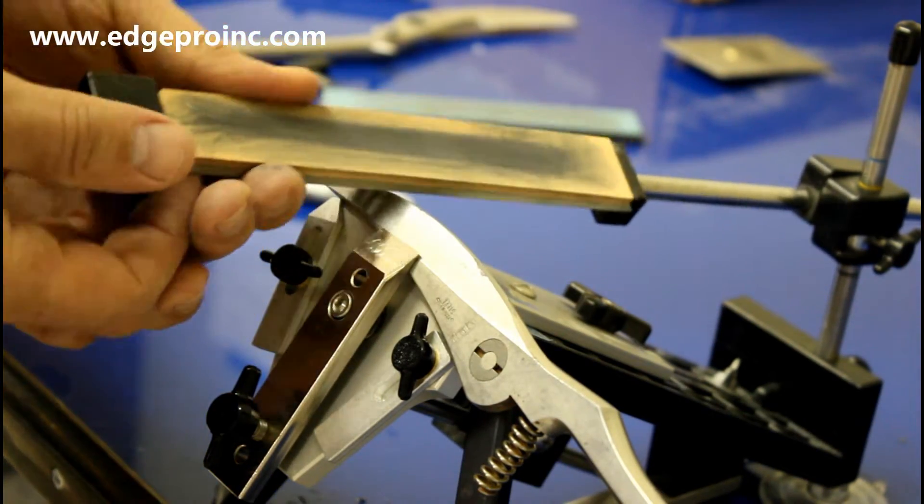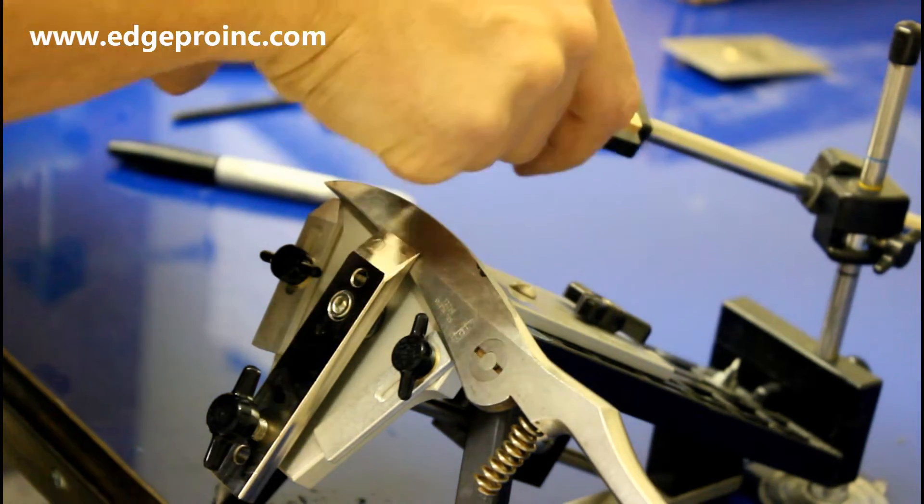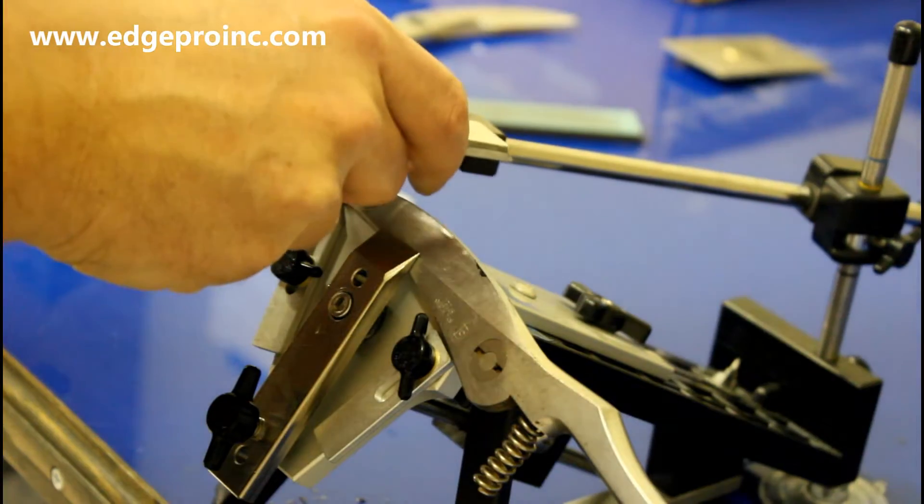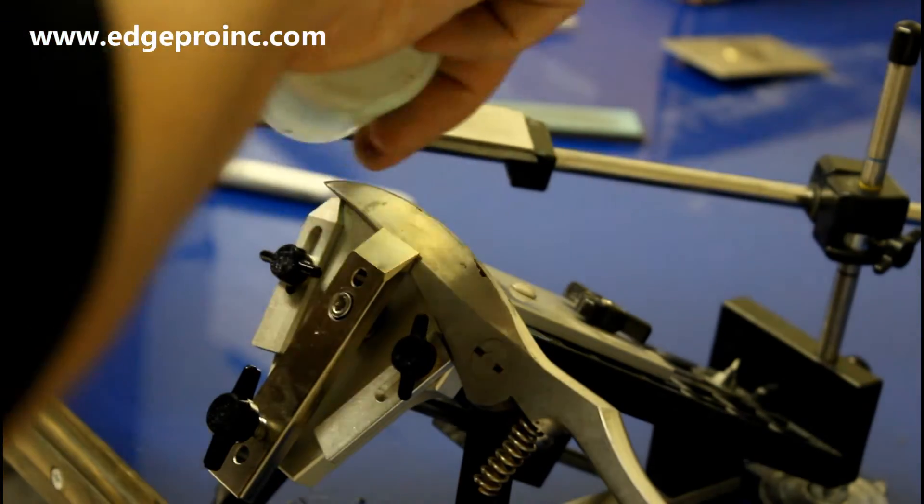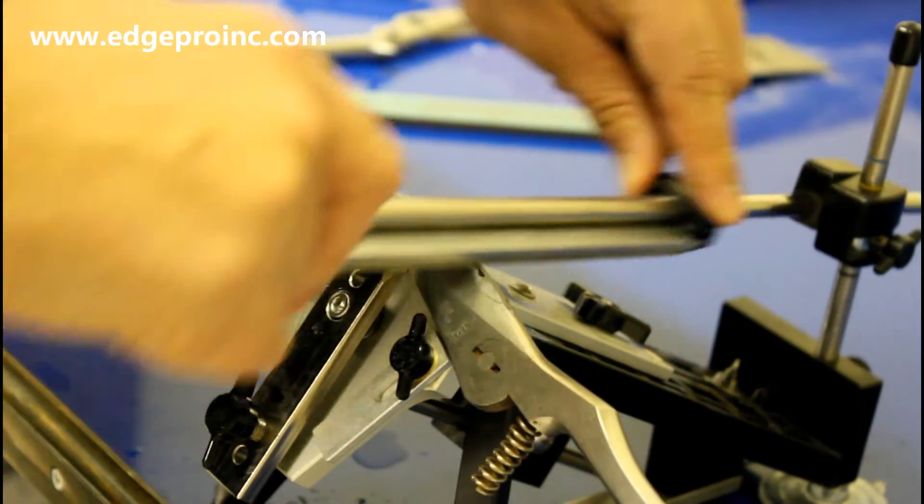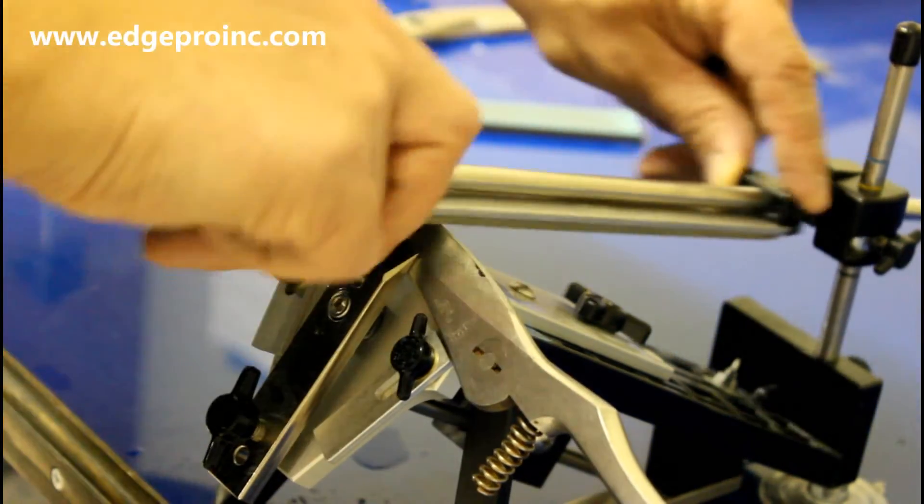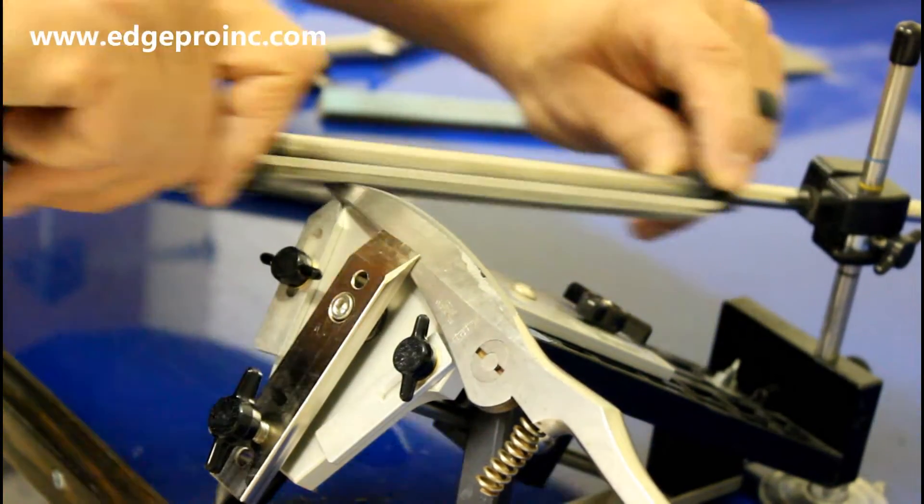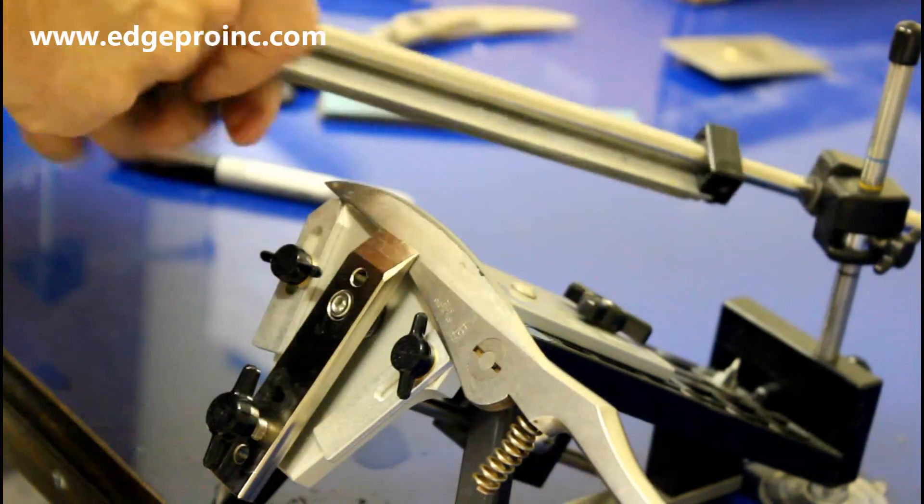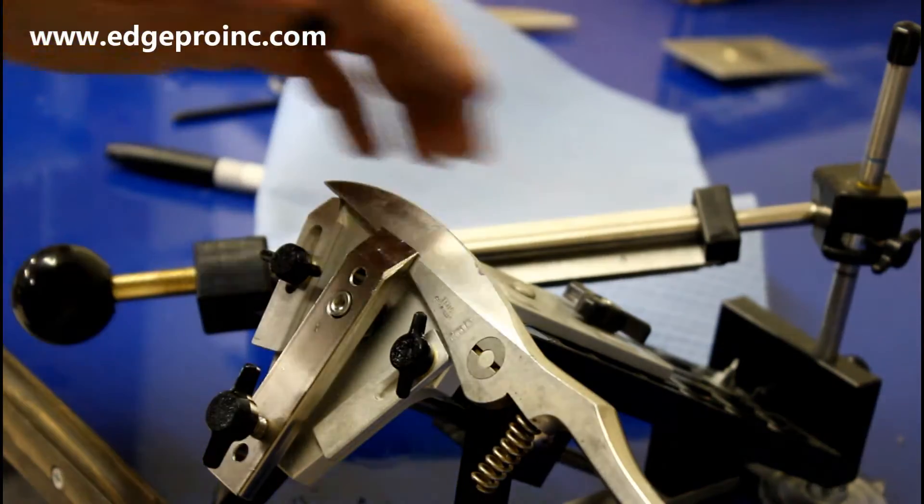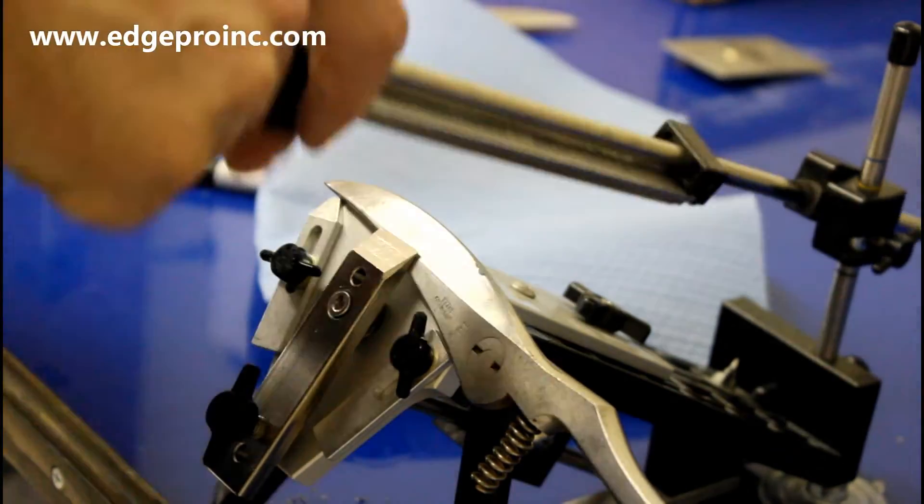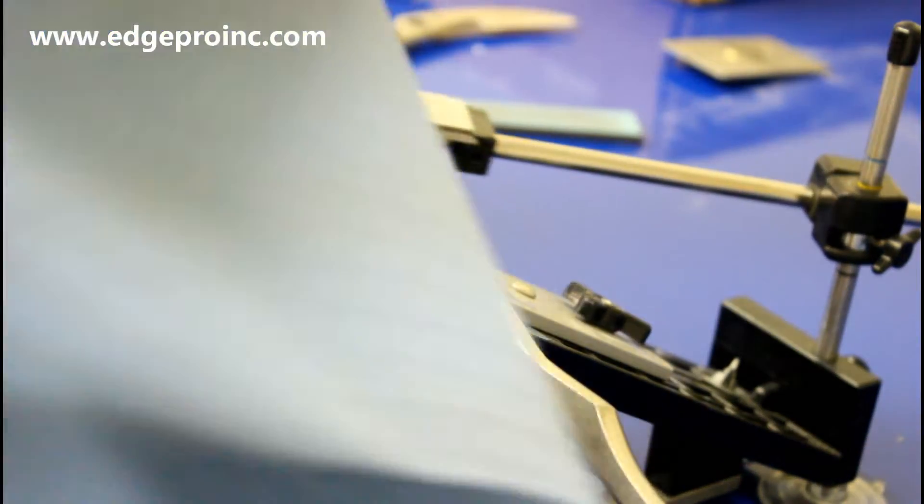So I'm actually going to switch from the 400 grit stone down to the 220 to try and cut down on time. I can feel burrs starting to form. These ones are just going to take a little bit of time.